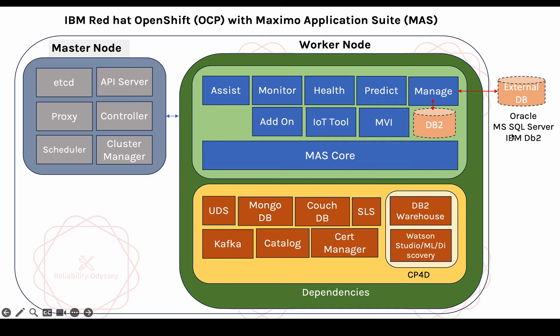Maximo Application Suite is an enterprise product which runs on Red Hat OpenShift. Red Hat OpenShift is a containerization orchestration platform. It is an enhanced version of Kubernetes, because it provides some better management capabilities that are not readily available in Kubernetes.